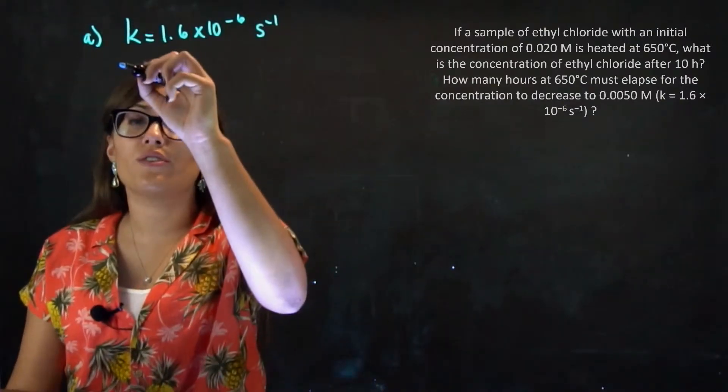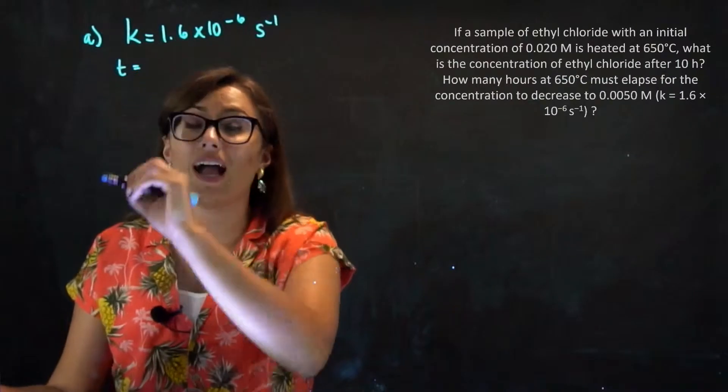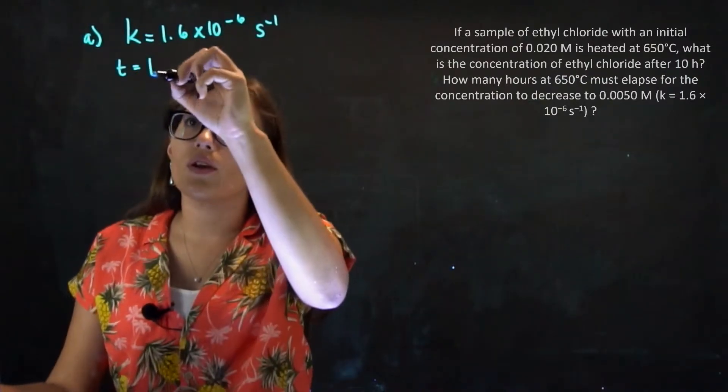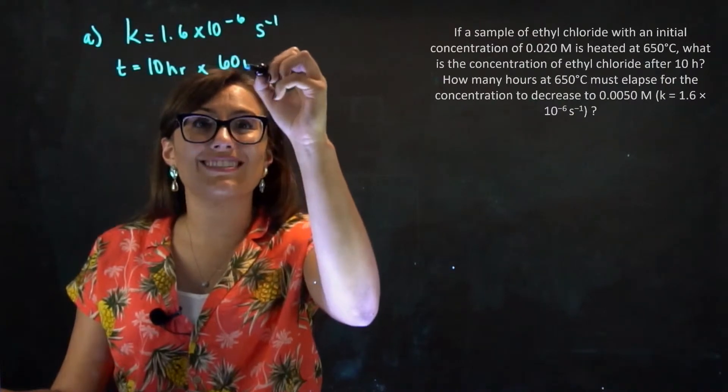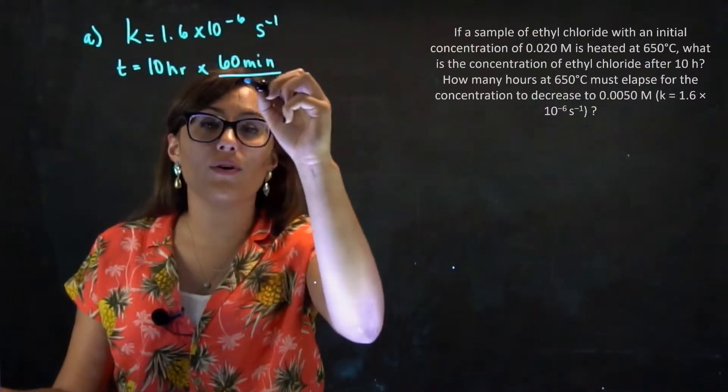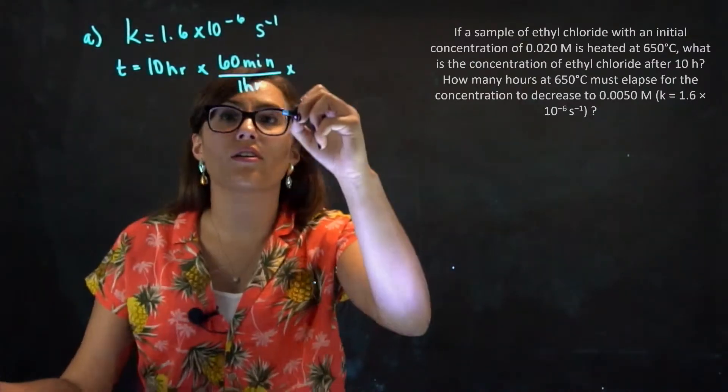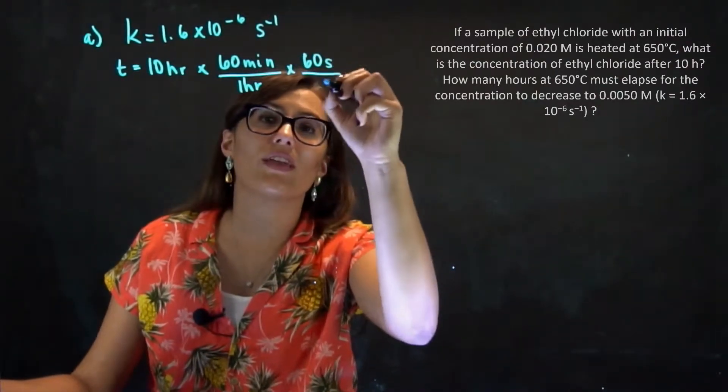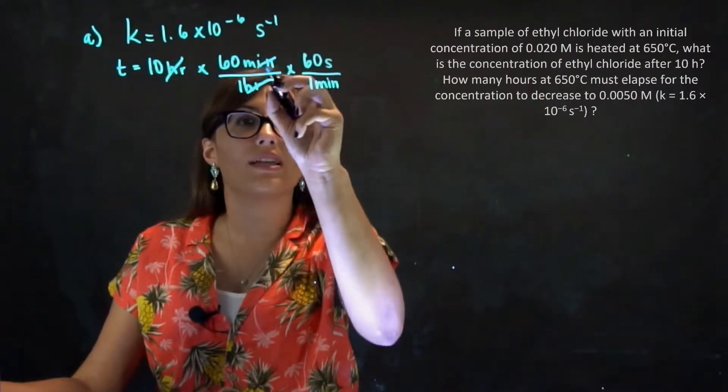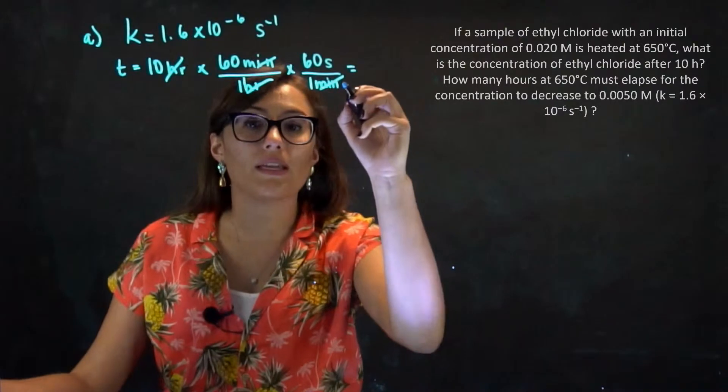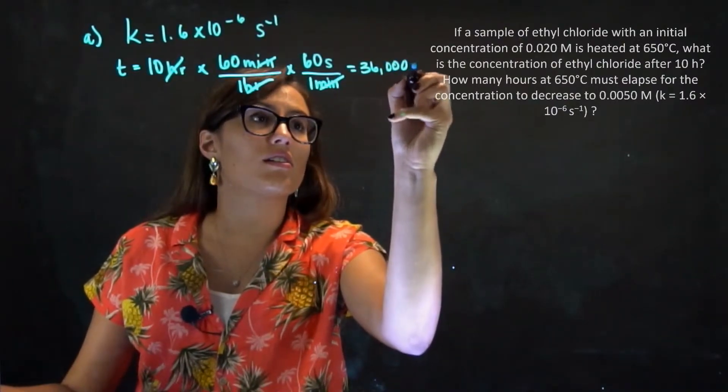So for this problem, we're going to do the same thing. We're in units of seconds, so we also have to make sure our time is in seconds as well. So we have 10 hours. We know that there's 60 minutes in an hour and that there are 60 seconds within a minute. Hour and hour, minute and minute. And this ends up equaling 36,000 seconds.